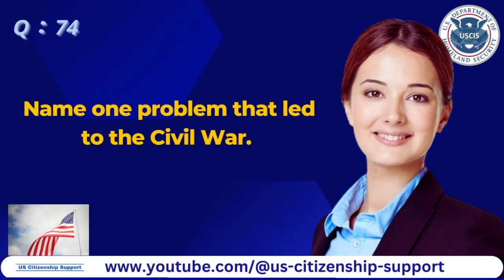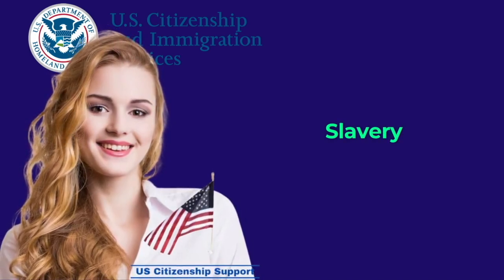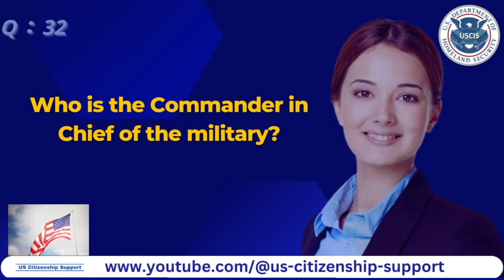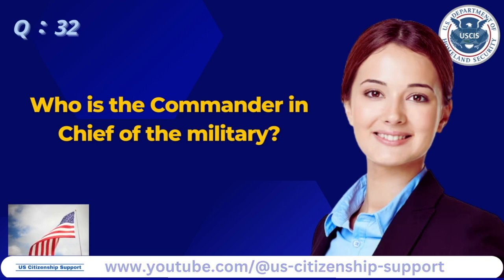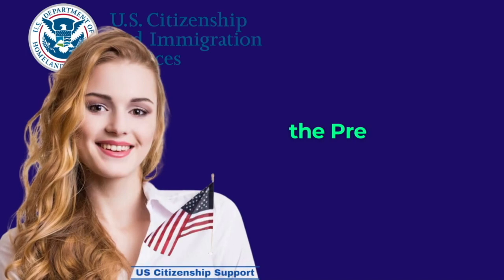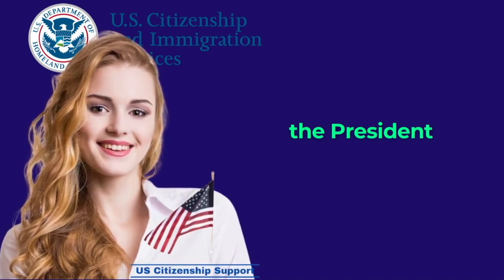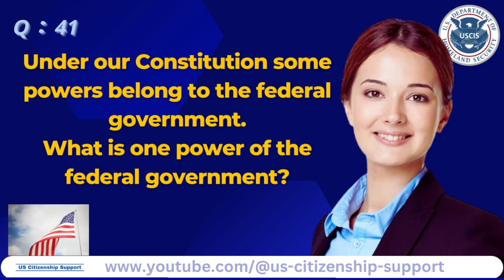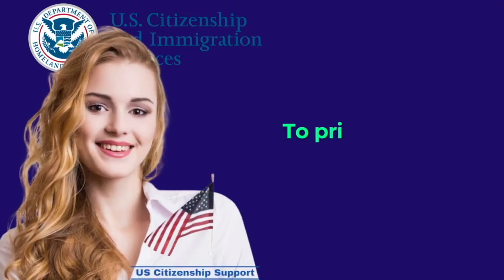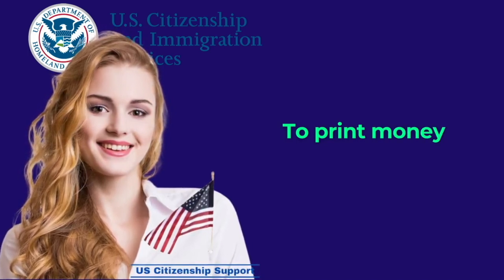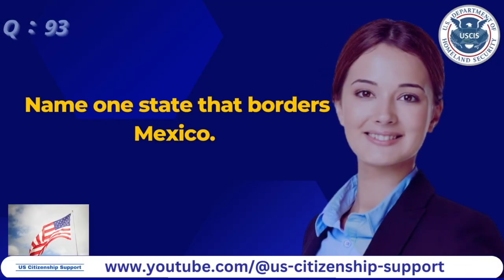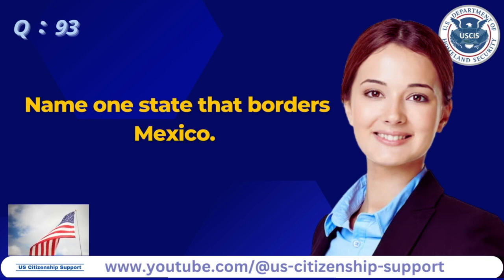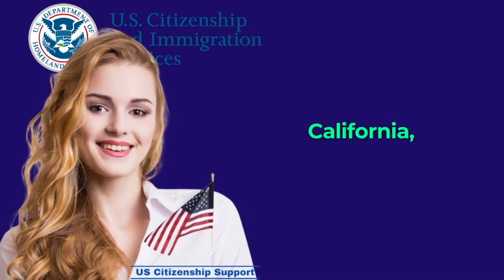Name one problem that led to the Civil War. Slavery. Who is the commander-in-chief of the military? The president. Under our Constitution, some powers belong to the federal government. What is one power of the federal government? To print money. Name one state that borders Mexico. California.